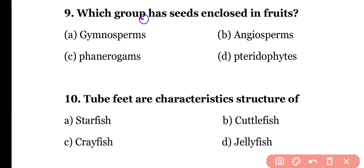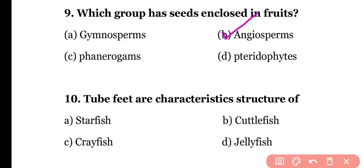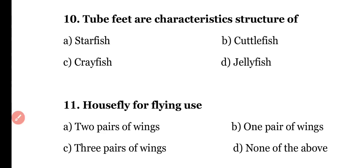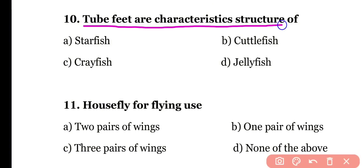Question number nine: which group has seeds enclosed in fruits — (a) Gymnosperms, (b) Angiosperms, (c) Phanerogams, or (d) Pteridophytes? The correct answer is option B — angiosperms have seeds which are enclosed in fruits.